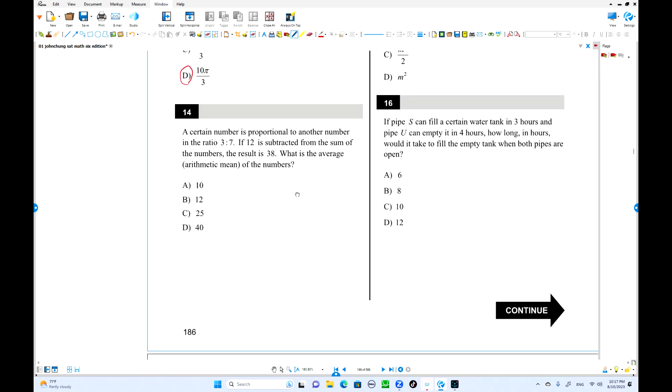Here is number 14. A certain number is proportional to another number. We have two numbers in the ratio 3 to 7. We can define two numbers: one is 3k using k, and the other one is 7k. That is two numbers. It depends on the value of k. This is the actual number. 12 is subtracted from the sum of the numbers. Sum of the numbers is 10k. When you take out 12, the result is 38. So 10k equals 50. K equals 5. So actually two numbers: one is 15, the other one is 35.